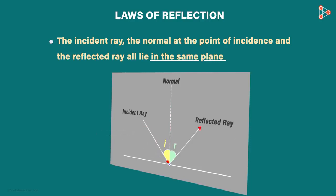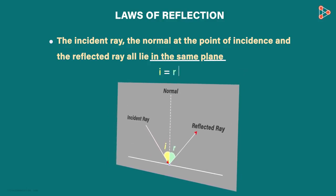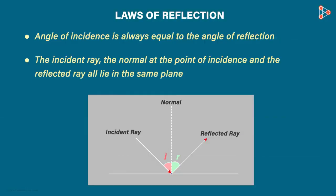It can only be like this. i will be equal to r, and they will lie on the same plane. I hope both the laws are clear now.